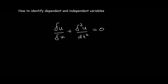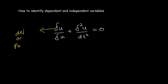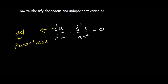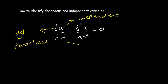Let's take the last example. Here we have a partial differential equation because it involves partial derivatives. This symbol is known as the del or the partial d. We can read this equation as the partial derivative of u with respect to x, plus the second partial derivative of u with respect to t. In this equation, the dependent variable is u, and the two independent variables are x and t.